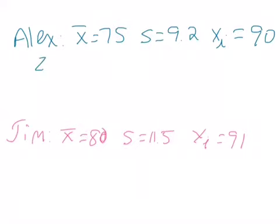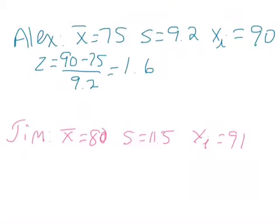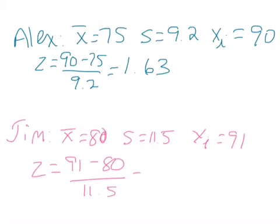So who did better? At first glance it looks like Jim did better, but z-scores will tell us. Using the z-score formula for Alex — his score minus the mean over the standard deviation — we get 1.63. For Jim, we go 91 minus 80 over 11.5, and we get 0.96.